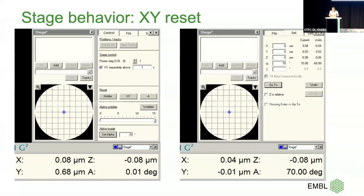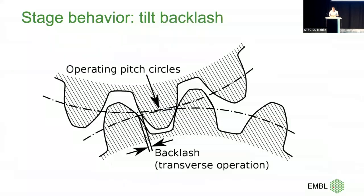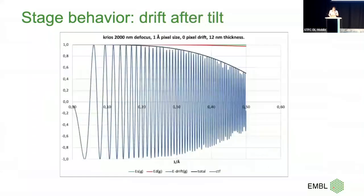Another important thing is tilt accuracy. I asked ThermoScientific and we actually tested this with Luca using a silicon sample with convergent beam electron diffraction, getting a Kikuchi pattern — very sensitive to stage tilt. It was very, very accurate. That's why I say you should in principle not need to solve for stage tilt. There is backlash on the stage when you reverse direction, so the original script always tilted in one direction: on the minus side you overshoot three degrees and come back from the same direction.